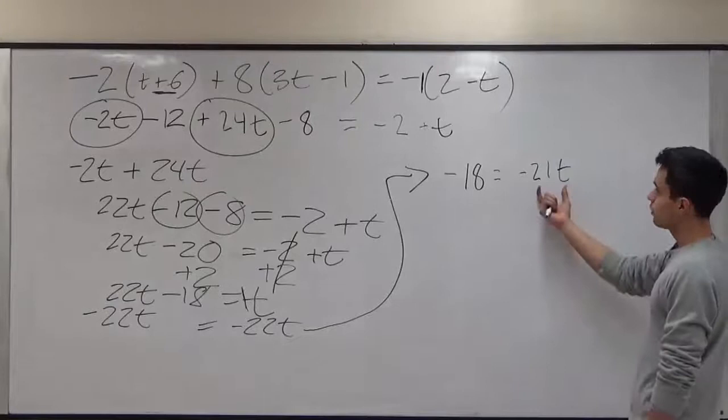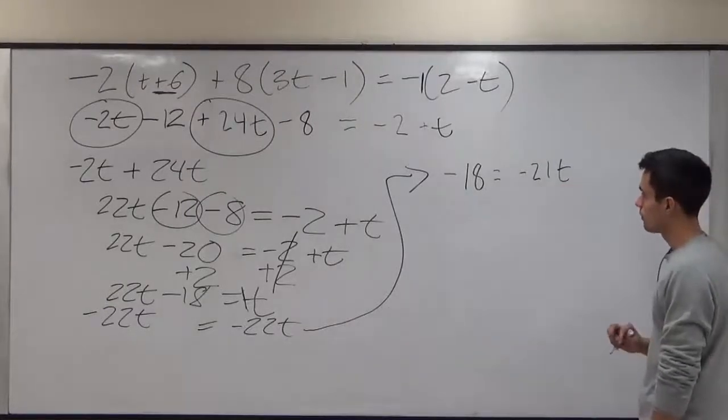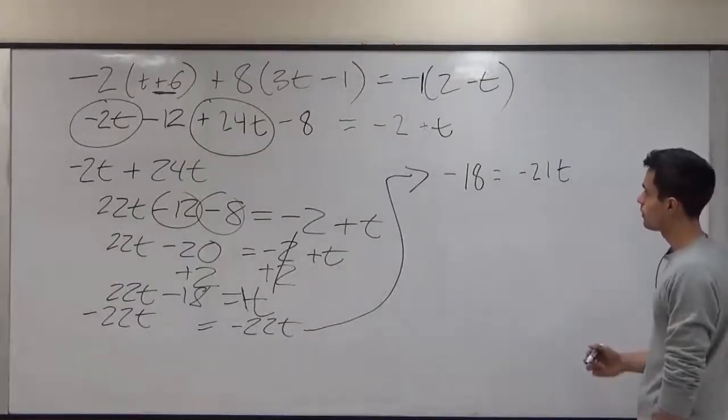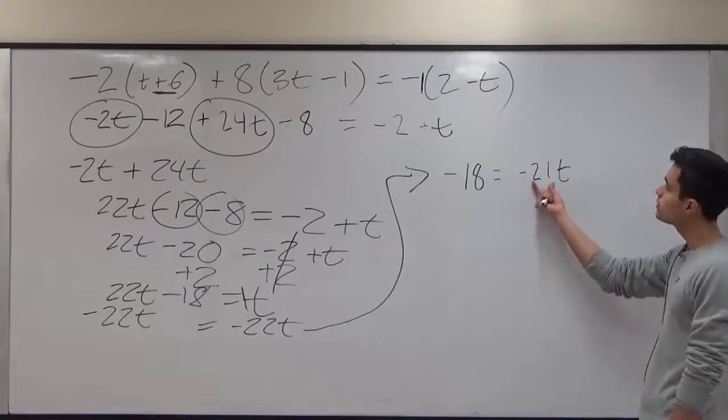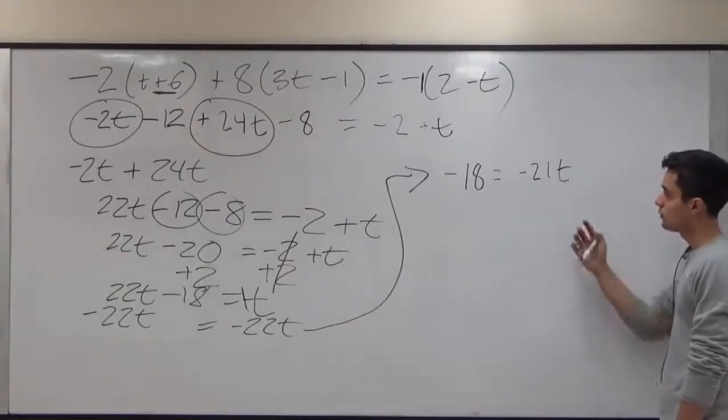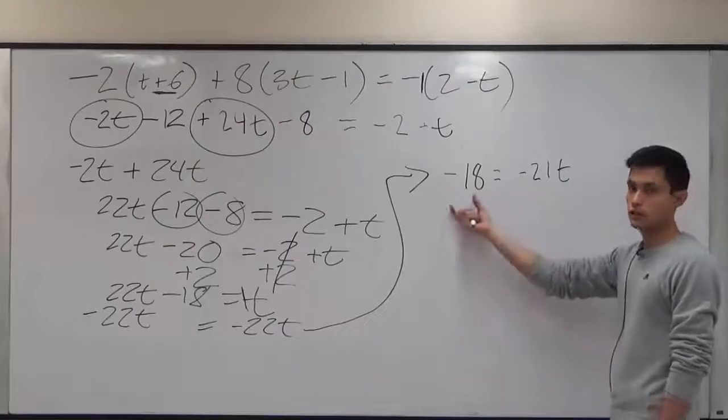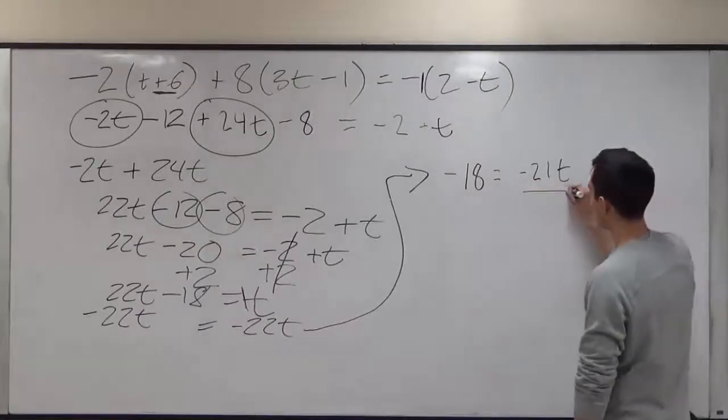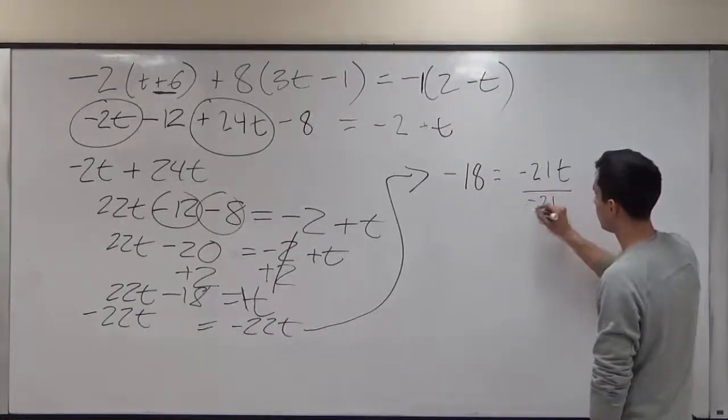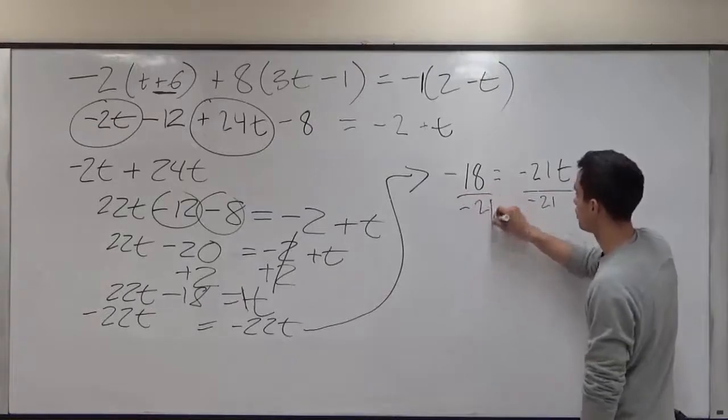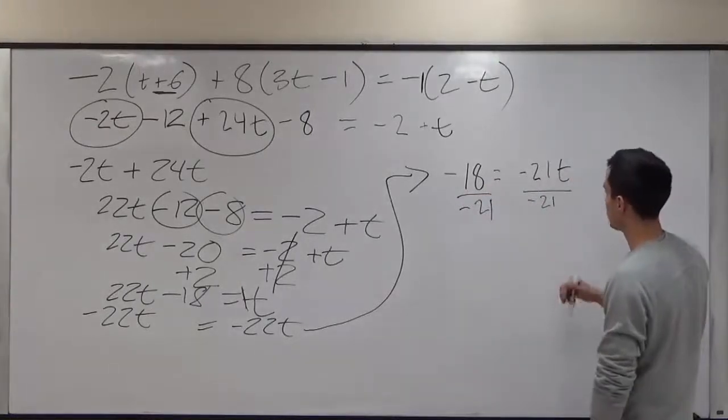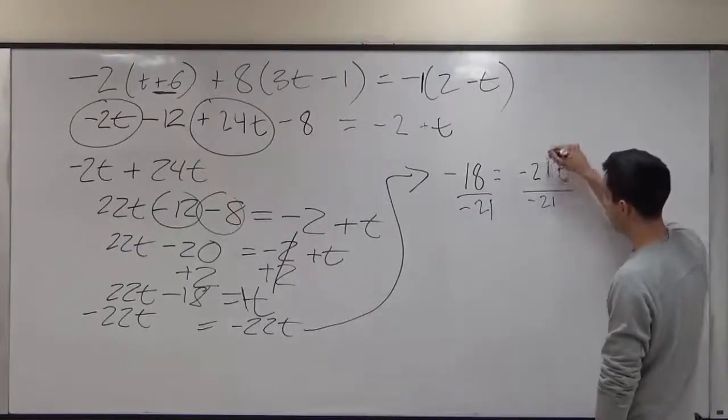So now we're really close to getting t by itself. But in order to get t by itself, we see that negative 21 is being multiplied by t. So what we do to one side, it has to be done to the other. So we divide by negative 21 on both sides to get t by itself. This just gives us one.